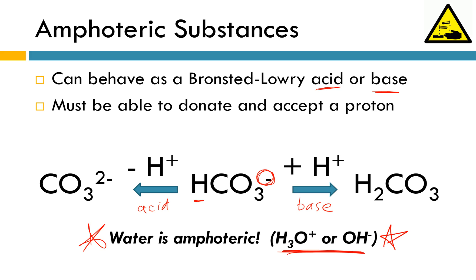There aren't really any practice problems for this. What I would suggest doing is just getting really comfortable with these definitions of acids and bases. Arrhenius acids and bases are the definitions you learned in middle school — associate H+ with an acid and OH- with a base. Not all acids and bases can be explained through the Arrhenius theory, so we have the Bronsted-Lowry theory. According to the Bronsted-Lowry theory, think about acids and bases as proton donors and proton acceptors. As you might imagine, they have to come in pairs, and that's going to be important in future lessons. I think that's all I've got for today — thanks for tuning in, and I hope you found this helpful.